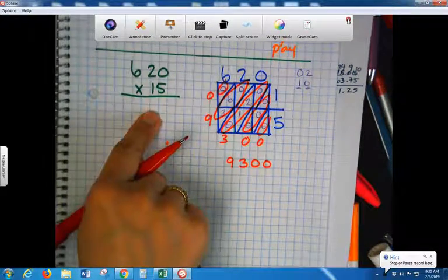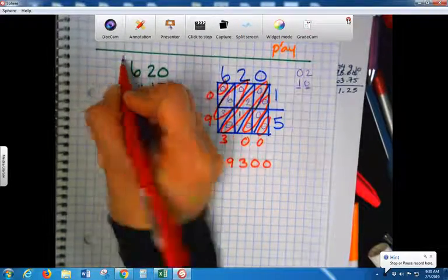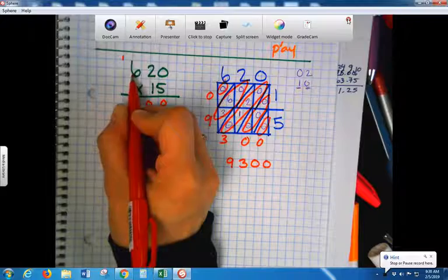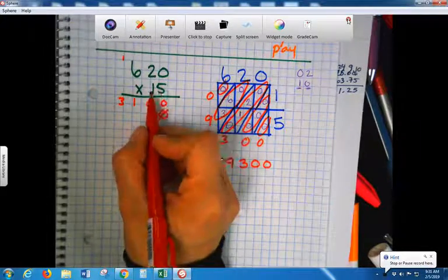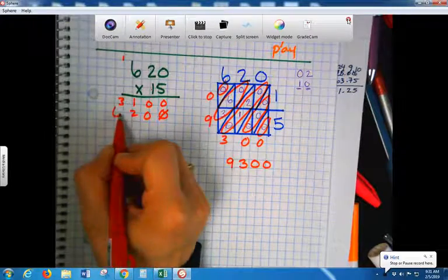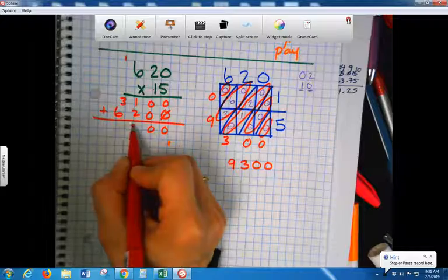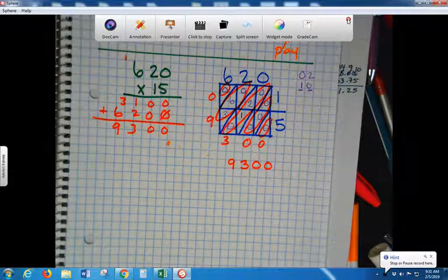Now this box shows you the answer to 6 times 1, 06. This box shows you the answer to 6 times 5, 30. But we don't write our whole answer in a box, we separate it. Now here's how you get your final answer. You add this, you get 0. Then you add this, 0. Then you add this, 3. Then you add this, 9. What's my answer? 9300.